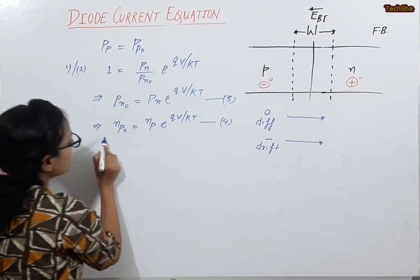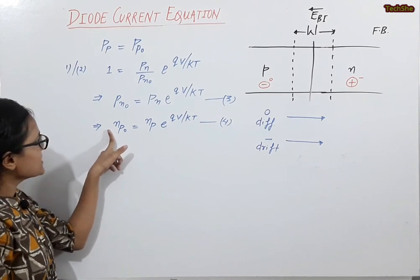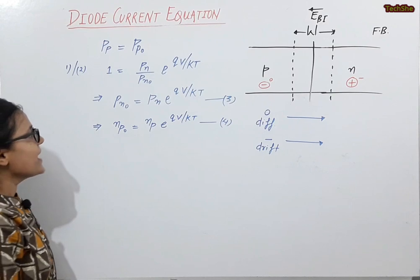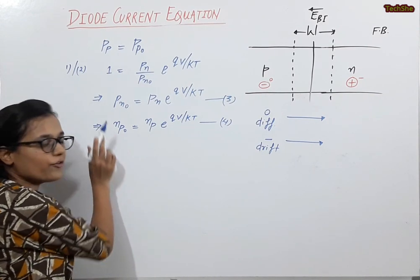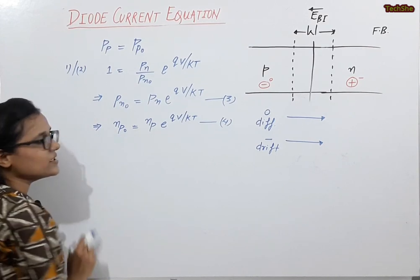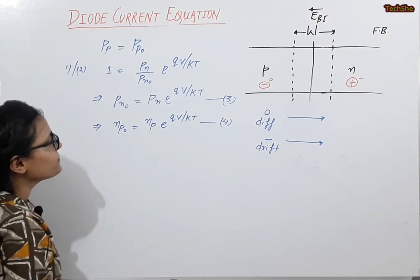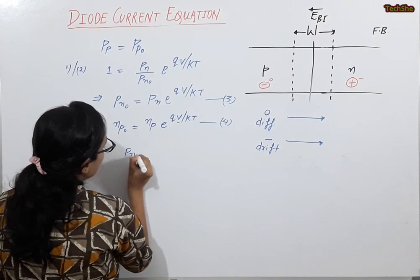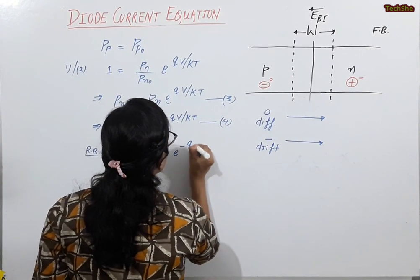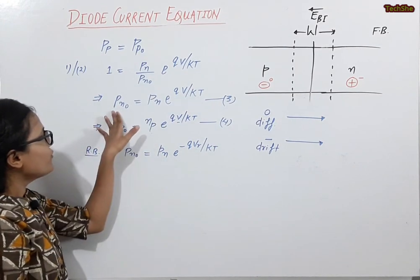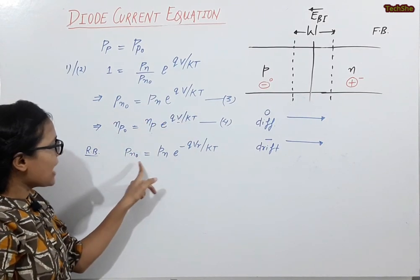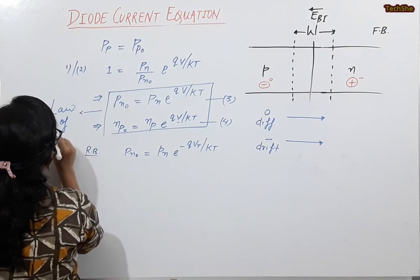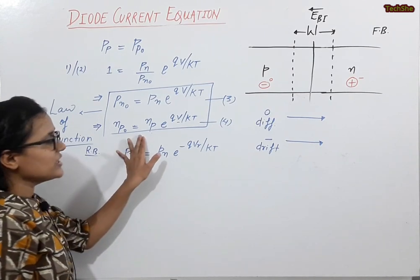Here, PN₀ is the hole concentration in the N-region when the diode is unbiased, and PN is when the diode is forward biased. NP is the electron concentration in the P-region when forward biased, and NP₀ is the equilibrium value. V here is the forward voltage. In reverse bias, the equation becomes PN₀ = PN × exp(−qVR/KT), showing a decrease. These equations represent the law of the junction — the variation in carrier concentration.